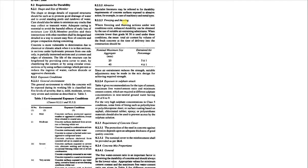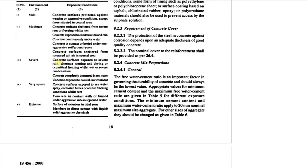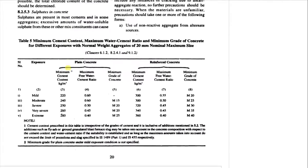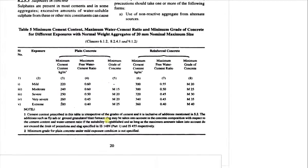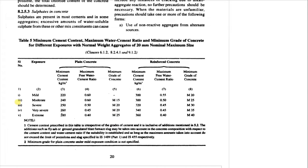Looking at IS 456:2000, we check the severe condition: concrete surfaces exposed to severe rain, alternate wetting and drying, or occasional freezing, wet or severe condensation. This tank falls under the severe category as given on page 18. Coming to page 20, for severe condition with reinforced cement concrete, the minimum grade is M30. So M30 is sufficient.